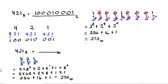We get the same answer — 273 — confirming that 421 octal equals 100010001 in binary. That's how you convert octal numbers into binary and check your work. Thank you for watching; don't forget to subscribe if you haven't yet, and tap the notification bell to be notified every time I upload a new video.